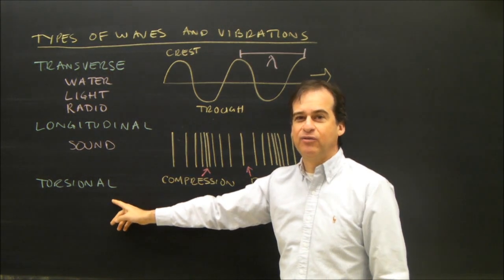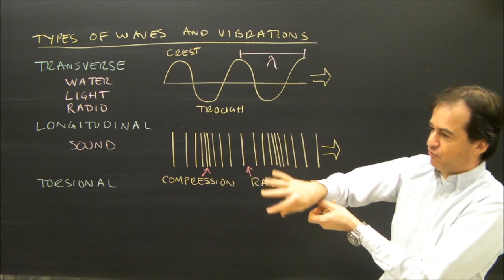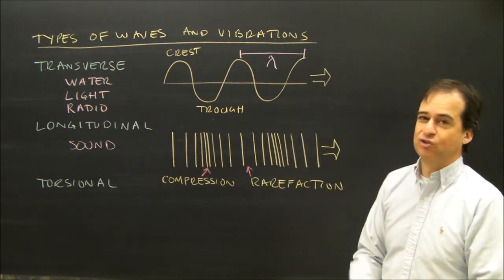Torsional, we don't really worry about very much. If I took a spring and I twisted it and let it untwist, that twist would work its way all the way to the other end. That's a torsional wave.